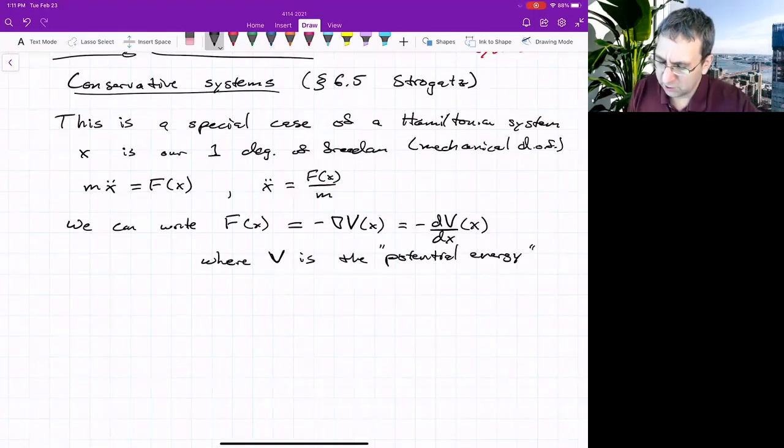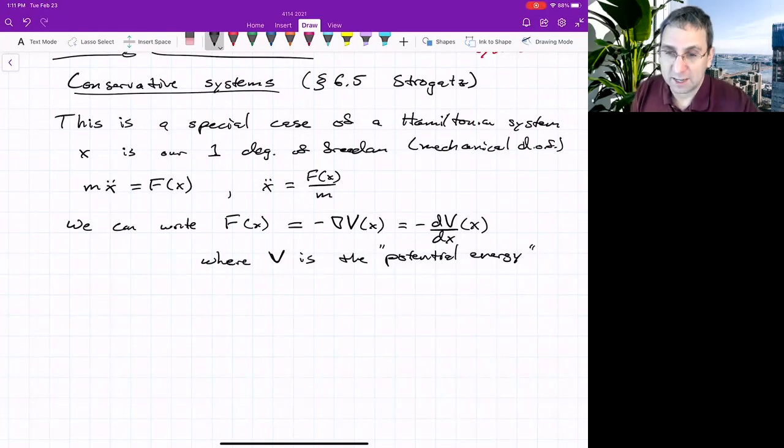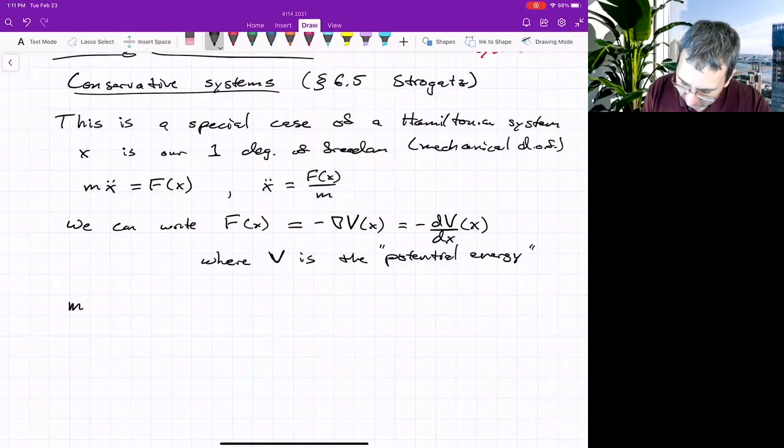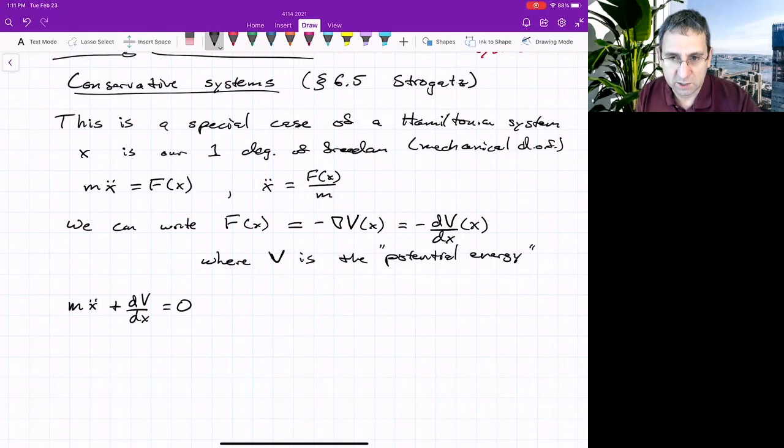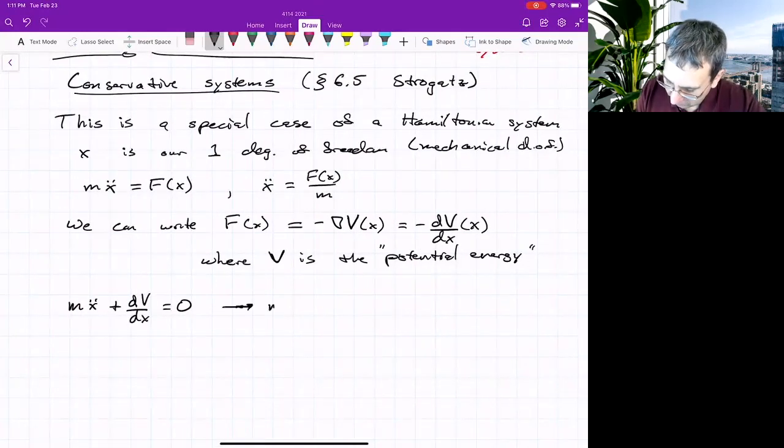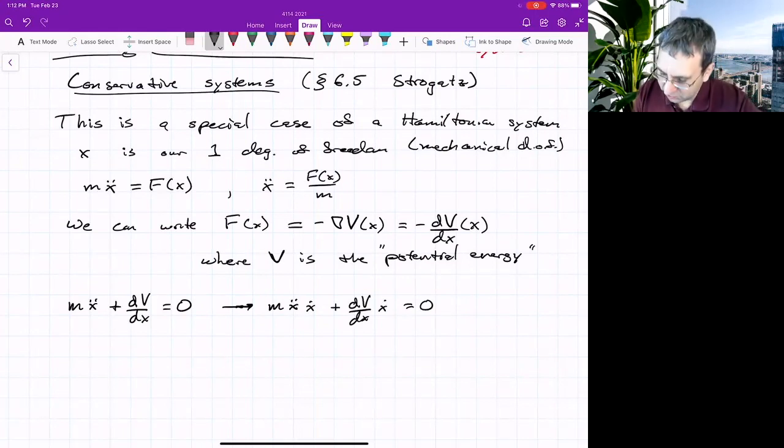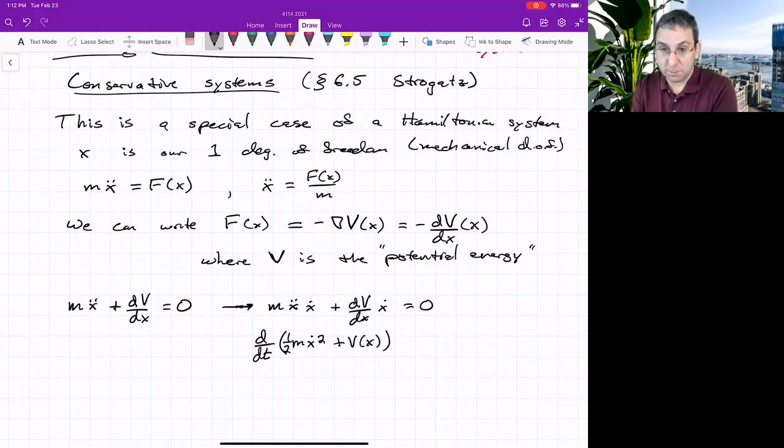We can, by a trick, show that there is a function of x and x dot that is constant, meaning it doesn't change with time. If we rewrite this as mx double dot minus f, which means plus dv dx equals 0. So we've just rewritten Newton's law in one dimension. We could do a trick, which is multiply both sides by x dot. If we multiply both sides by x dot, we get mx double dot times x dot plus dv dx x dot equals 0.